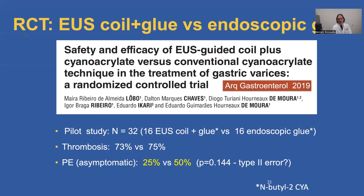This is a randomized controlled trial from Brazil comparing EUS-guided coil and glue versus endoscopic glue alone — a pilot study of 32 patients. The study showed basically equivalent results in terms of glue obliteration of varices, whether injected EUS-guided with addition of coil versus just endoscopic glue. But the embolization rate by CT scans was half that in the EUS-guided group compared to the endoscopic group. This did not reach statistical significance, but this is a very small study, so I think this is probably a type 2 error.